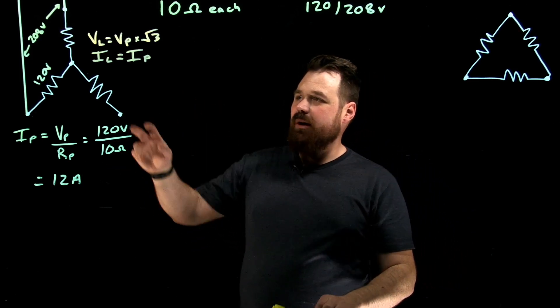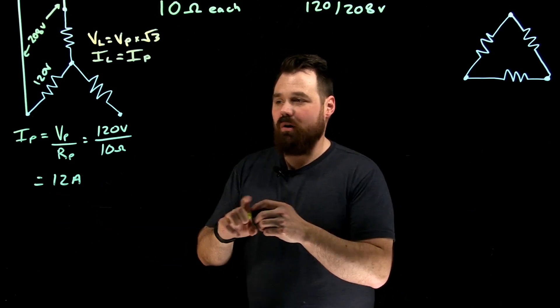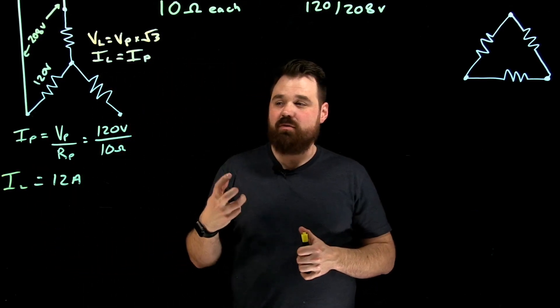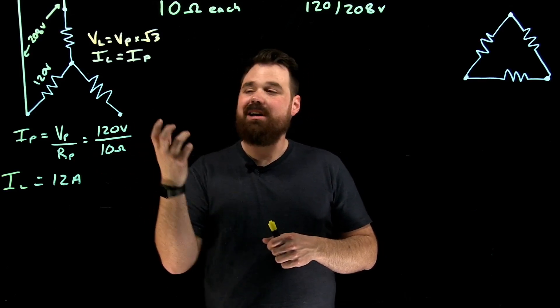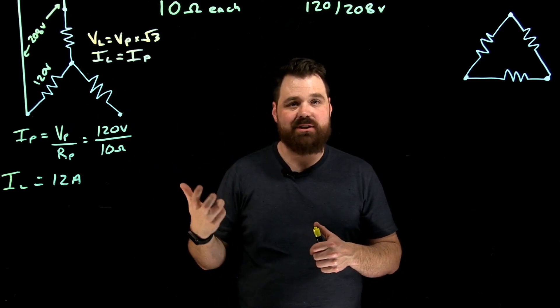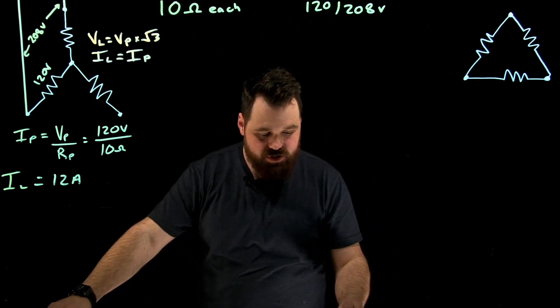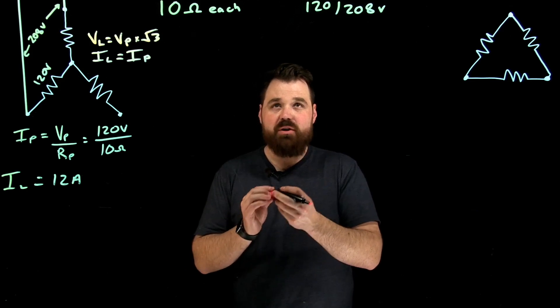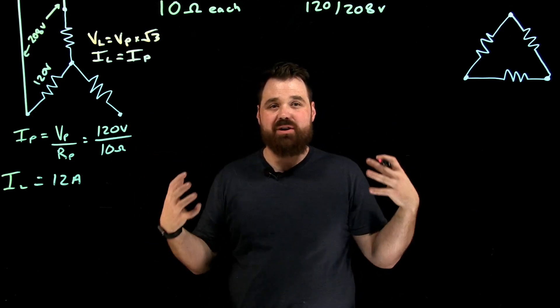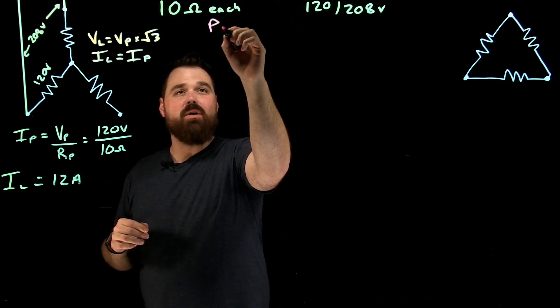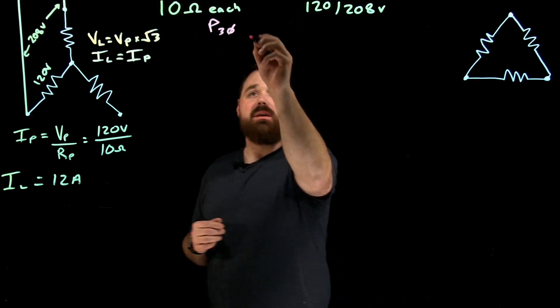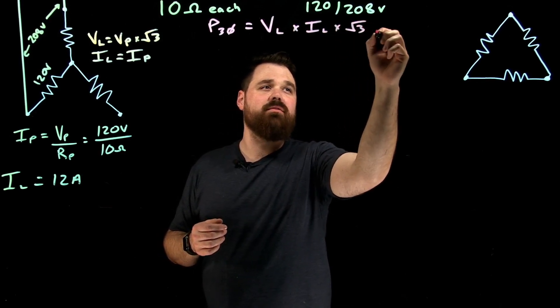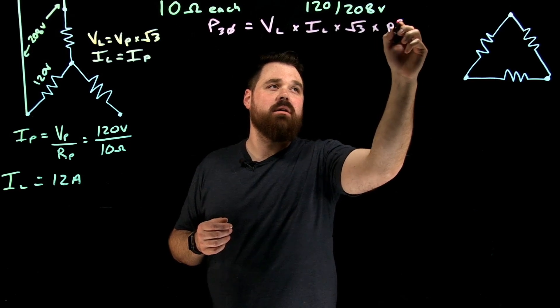So with that being said, if my I line equals my I phase, here where I wrote 12 amps, well yes it's my I phase, but it is also my I line. I just have to make sure when I'm calculating it, I'm using that phase voltage, because that's the actual voltage across the load or across the resistor. Now we're just going to jump into our big formula here. What did we come to talk about? We came to talk about power. So there's one formula that is crucial in three phase when calculating three phase power. And that is that my power, three phase power, is my line voltage times my line current times the square root of three times my power factor.